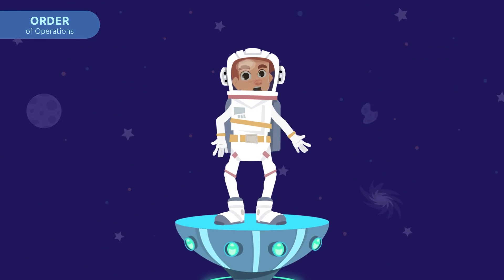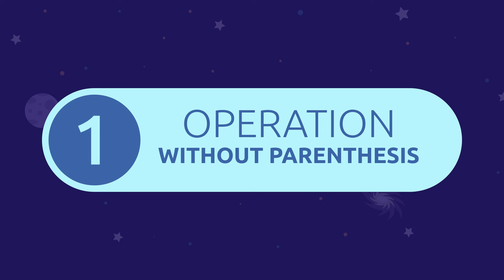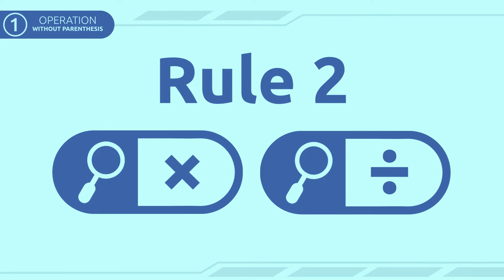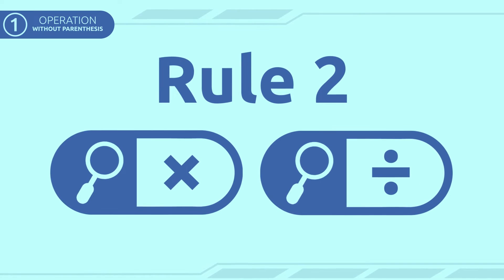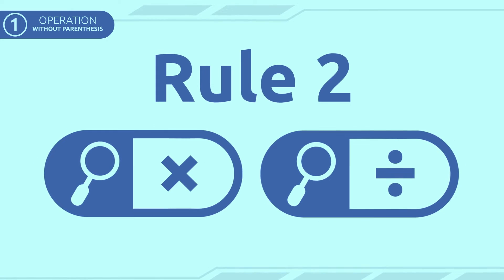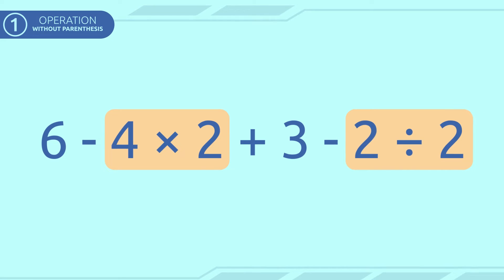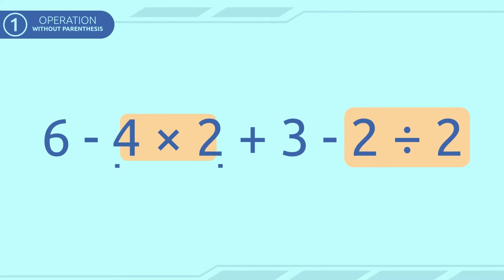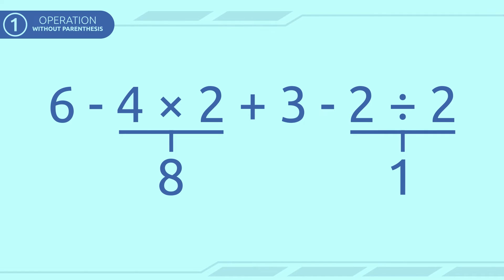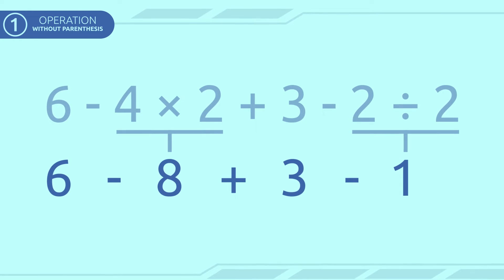I'll explain it to you with a few examples. You'll see how easy it is. We'll start with an operation without parentheses. As I said before, since there are no parentheses, we first have to identify the multiplications and divisions following rule number two. Once we have identified them, we will go on and solve them. Four times two equals eight. And two divided by two equals one. Now we only need to do the additions and subtractions in the order that they appear.